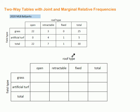In this video we're going to look at two-way tables with joint and marginal relative frequencies. In a previous video I looked at creating two-way tables, and you can see a completed two-way table at the top here. This is 2020 Major League ballparks broken down by the type of roof they have and the type of field they have.